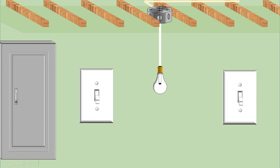Just a couple of examples where you might encounter three-way switching. Usually the most common application is one switch at the bottom of a set of stairs and one at the top that control the same light fixture. Another place is a long hallway where one switch at one end controls the same light as the switch at the other end. Kitchens are also a fairly common application. In the next video we'll add a four-way switch, but primarily we'll just talk about three-way switching in this video.